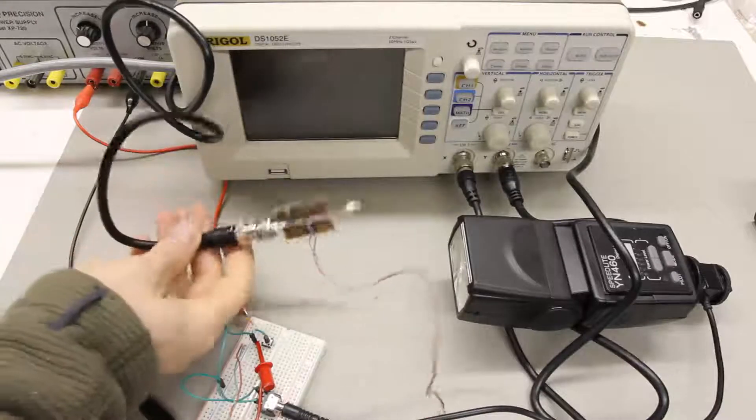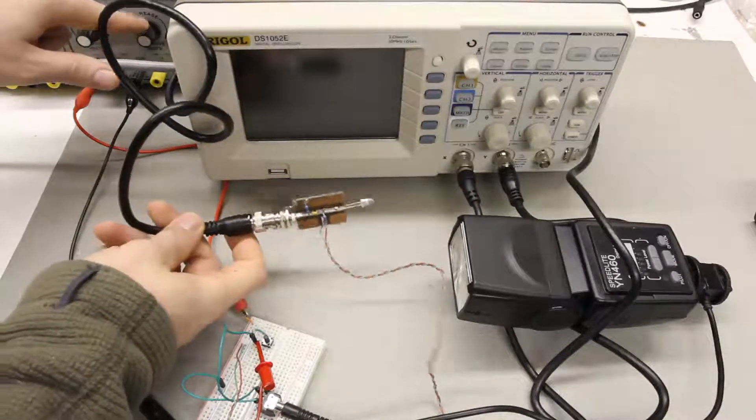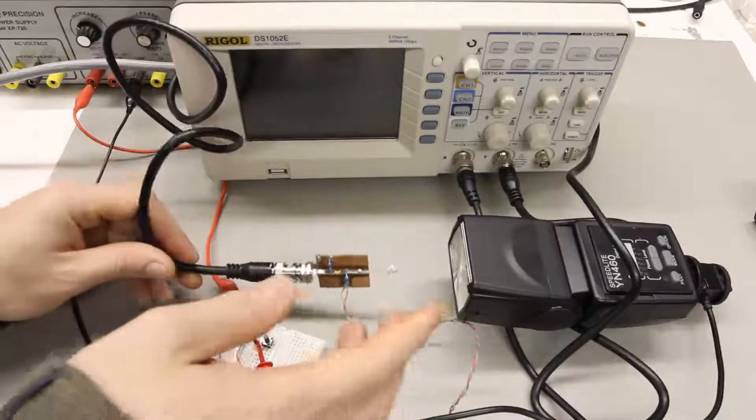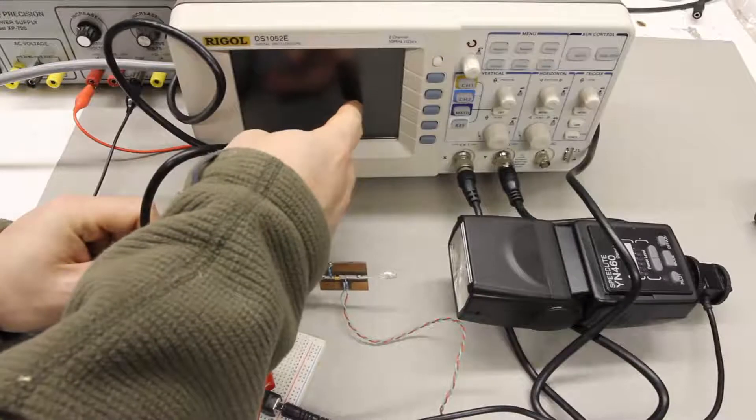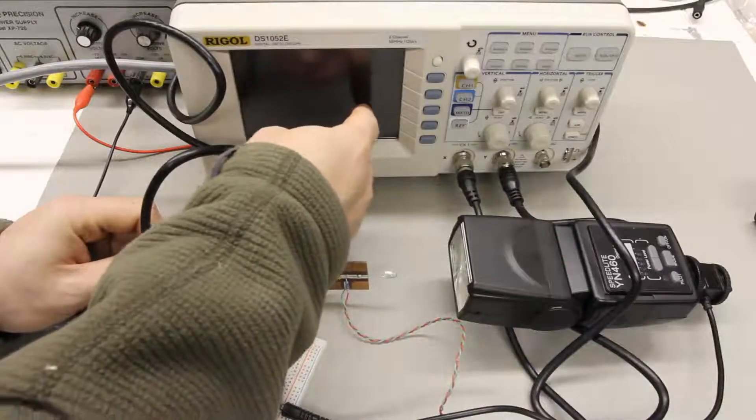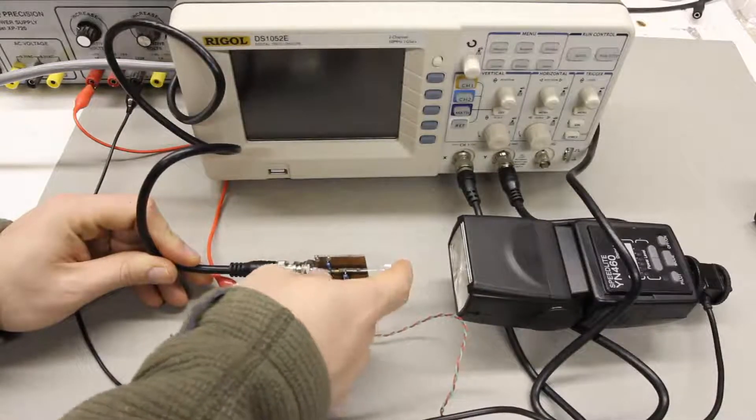And then on channel two I've got the light sensor here connected and it's being powered by this power supply. So what we'll see then on channel two of the oscilloscope graph is the voltage drop down negative, and when that happens that indicates that this sensor is detecting light.